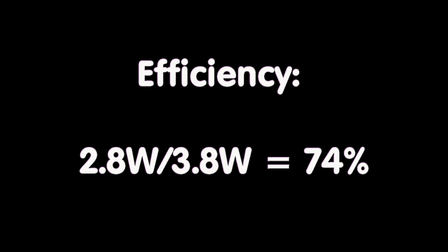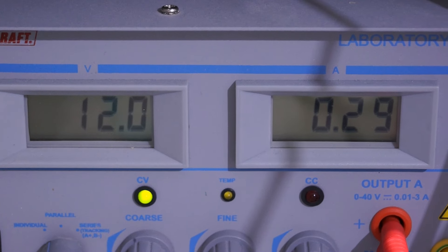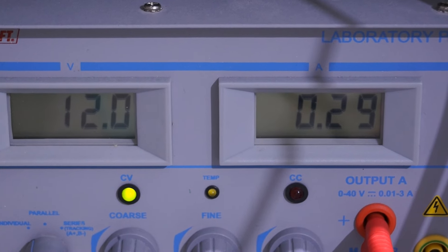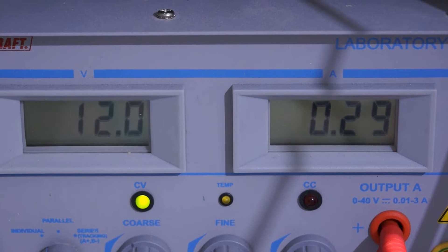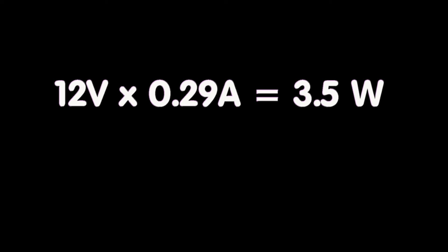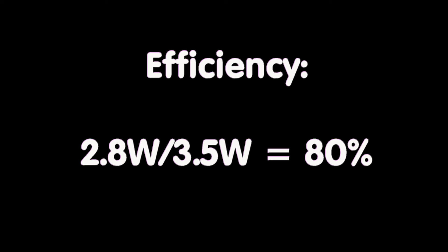If you connect the buck converter to 12 volts, the situation is even better. It only needs 3.5 watts and therefore the efficiency is 2.8 divided by 3.5 watts equals 80%.